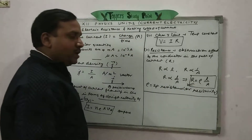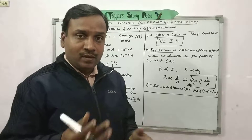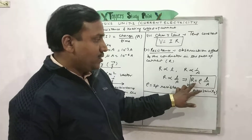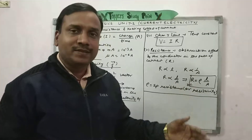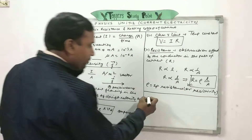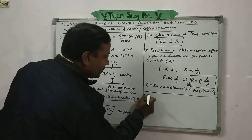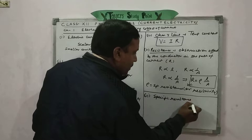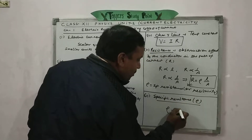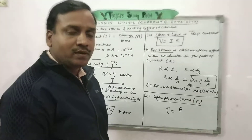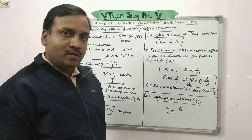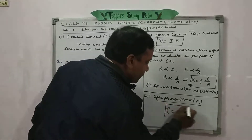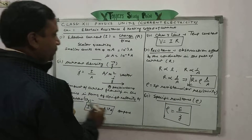Here ρ (rho) is the resistivity, also known as special resistance. The formula is R = ρL/A. An important note: if you stretch a conductor to double or triple its length, you calculate the new resistance by finding the ratio of initial resistance to final resistance. Resistivity ρ is defined as the ratio of electric field intensity E to current density j. Its unit is ohm·meter.